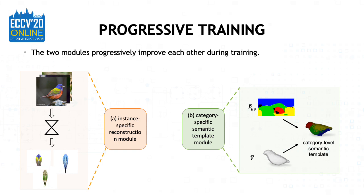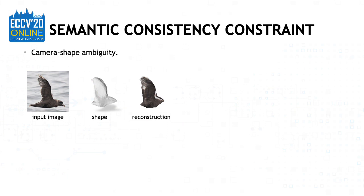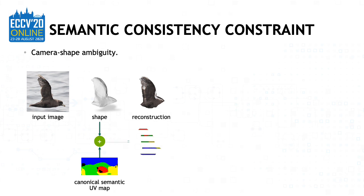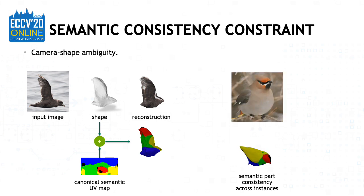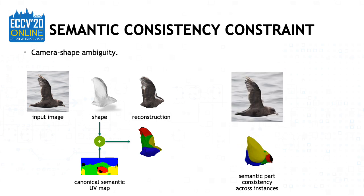The two modules progressively update each other during the training process. One challenge of learning a 3D reconstruction model in a self-supervised way is that there exist many local minima. For example, the reconstructed bird may look reasonable when rendered under the predicted camera pose. However, if we examine closely by warping the canonical semantic UV map onto the reconstructed mesh, we will find the predicted camera and the shape are both wrong. The head of the template bird is incorrectly deformed to form the wingtip of the instance. To overcome such local minima, we recall our main motivation: however the shape of the bird changes, its semantic parts stay the same.